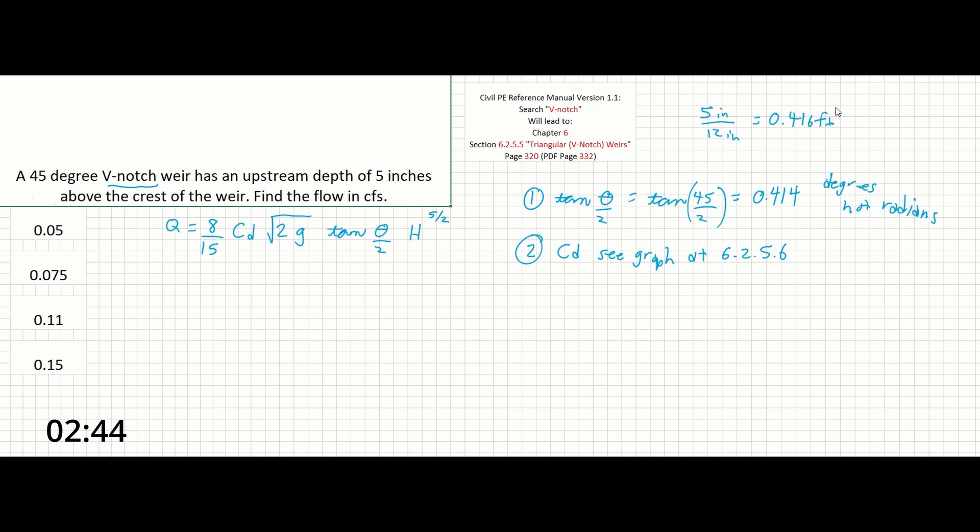However the height on the graph is in feet so 5 inches over 12 inches gives us just about 0.416 feet. So if we go just a little bit past 0.4 we can see that the Cd value is going to be pretty close to 0.605 at 45 degrees at y equals 5 inches over 12 inches equals 0.416 feet.